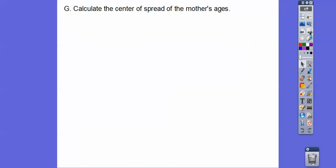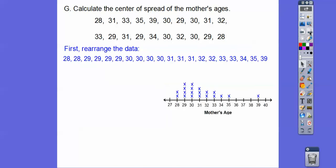So let's calculate the center and the spread of the mother's ages here. So here's the mother's ages. Well, let's first rearrange them from smallest to biggest. And I just used our line plot. That really helped me. So I can see there was two 28s, there was four 29s, four 30s. So here they are, two 28s, four 29s, four 30s, and so on.